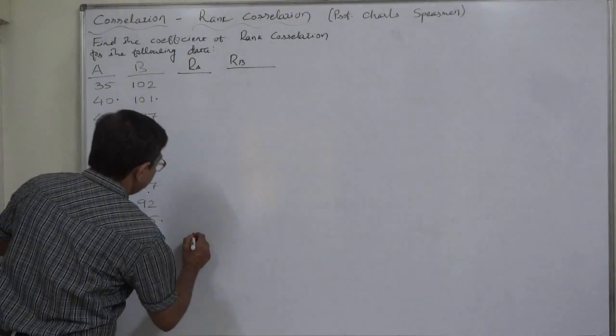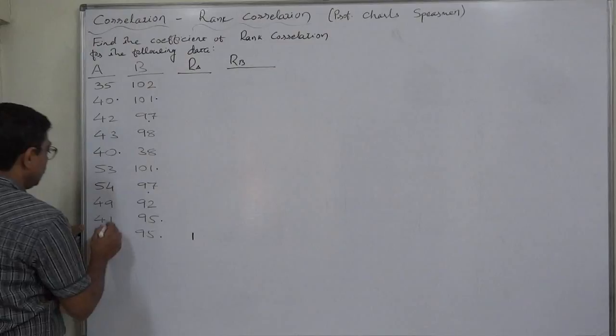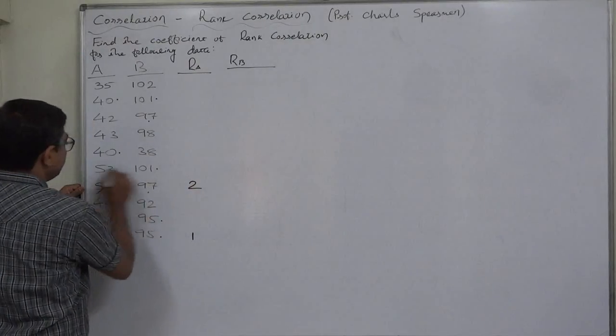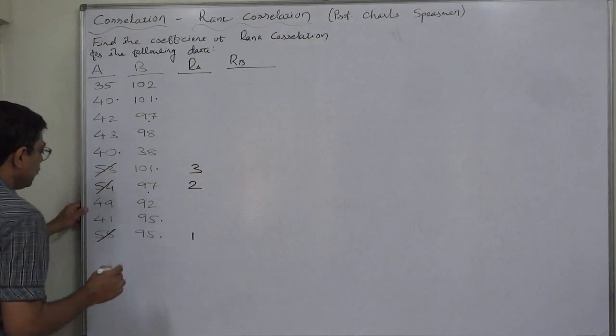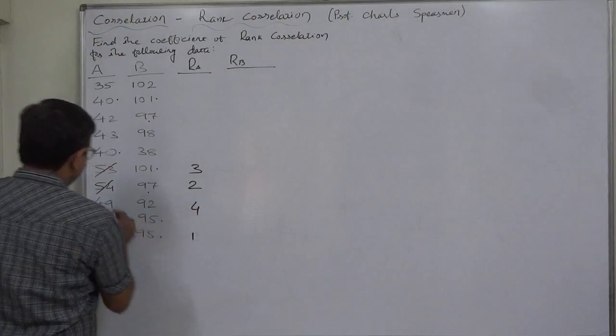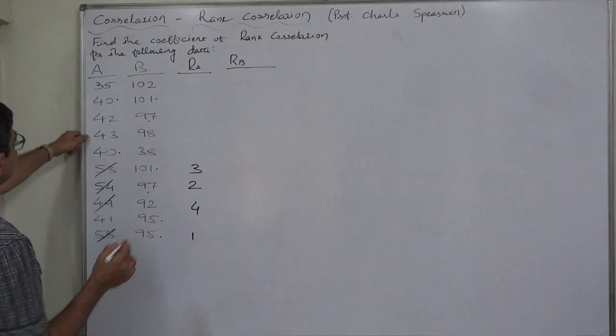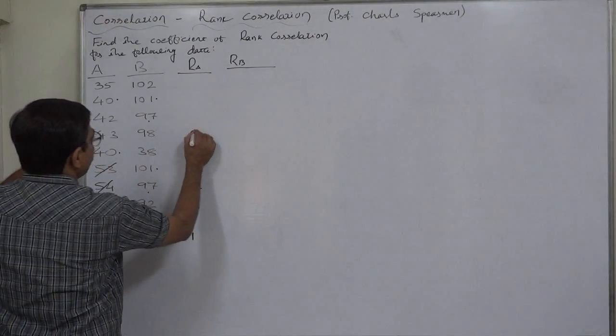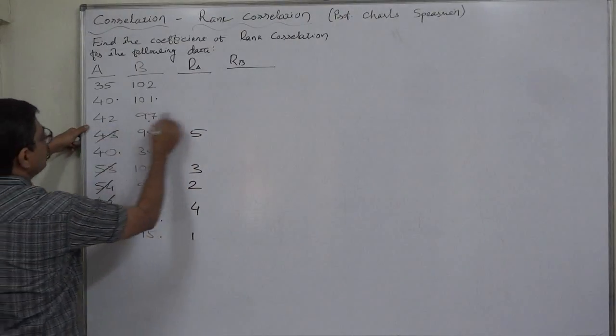In case of A, 55 is the highest so rank 1, 54 rank 2, 53 rank 3, 49 rank 4, after 49 it is turn of 43 rank 5.